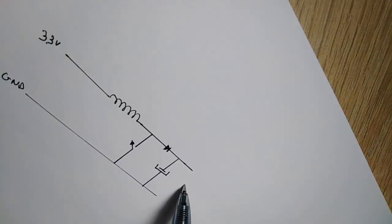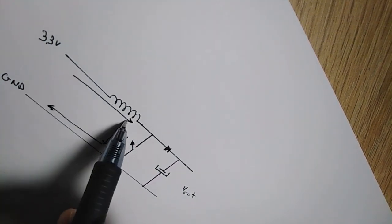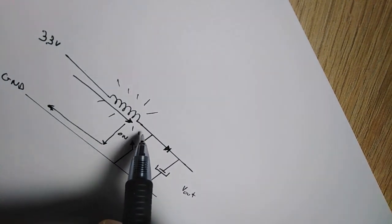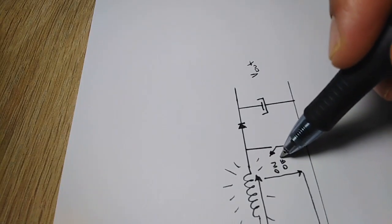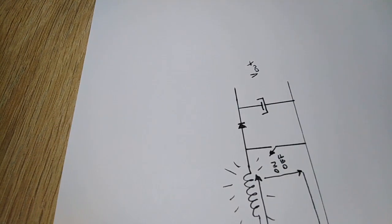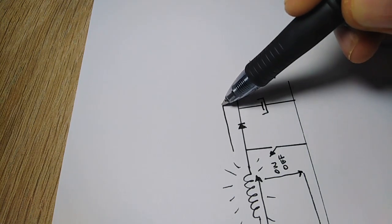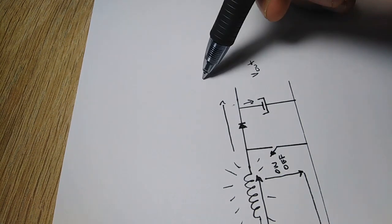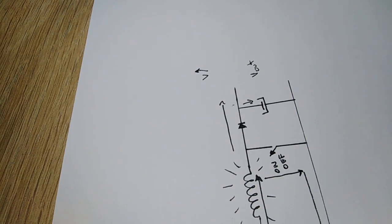This is the main circuit of a boost converter. First, we close this switch. The current flows through the coil and creates a magnetic field around it. Then we open the switch. The coil pumps the energy into the circuit through the diode to charge the capacitor and raise the output voltage. The voltage depends on the input voltage and the characteristics of the coil.